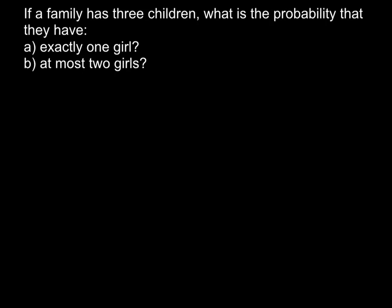Hi, today's video is going to be about genetics and the law of probability. Today's question is: if a family has three children, what is the probability that they have (a) exactly one girl, and (b) at most two girls?